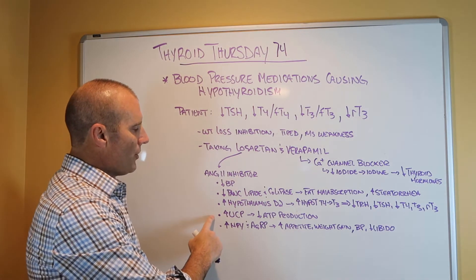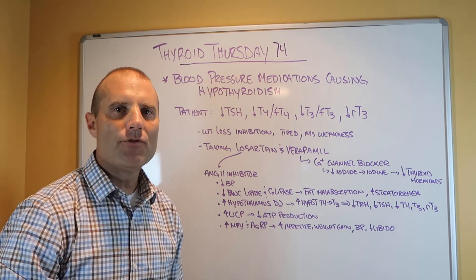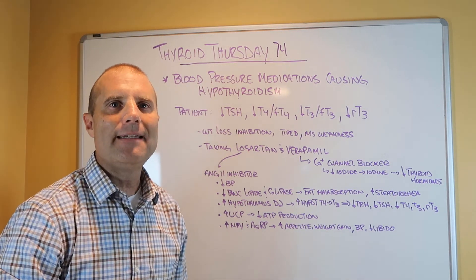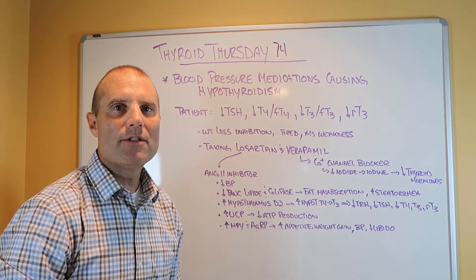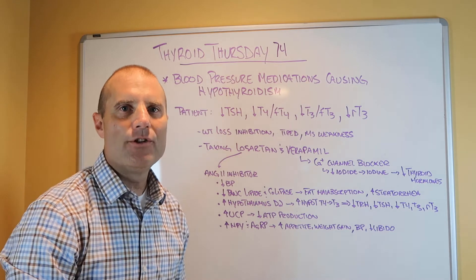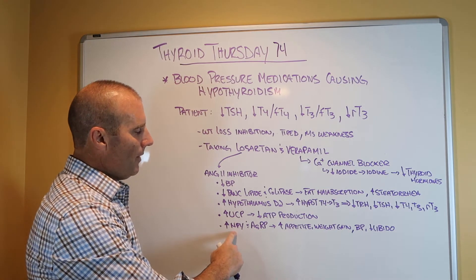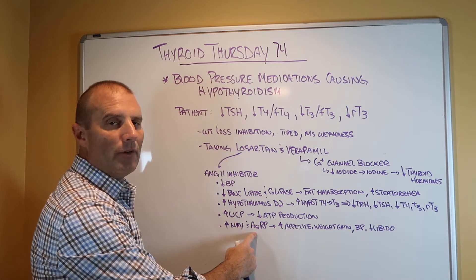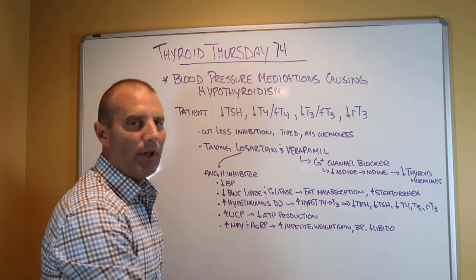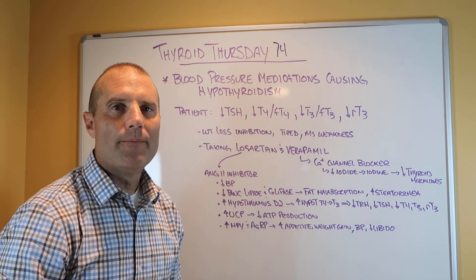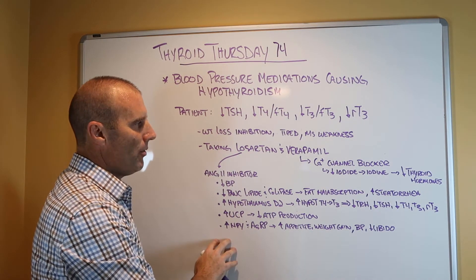The other problem with Losartan is it increases something called UCP, which decreases the mitochondrial production of ATP — the energy molecule of the cells, tissues, and muscles — so she's going to have less energy production. The third issue is that Losartan increases NPY and the agouti-related protein, which causes an increase in appetite, weight gain, blood pressure, and actually lowers libido. So this is just one of her blood pressure medications causing a problem.